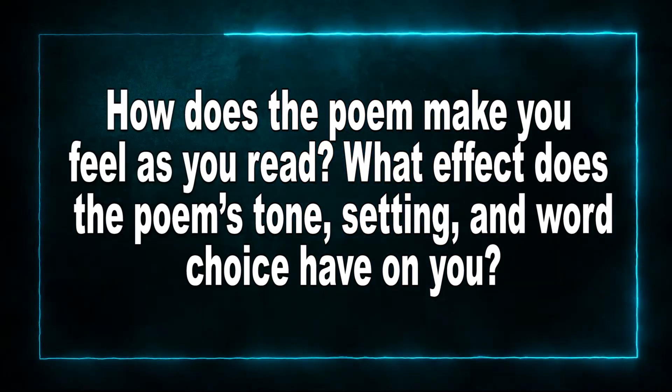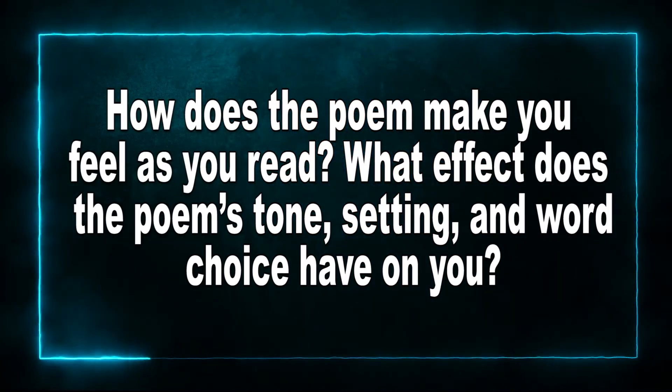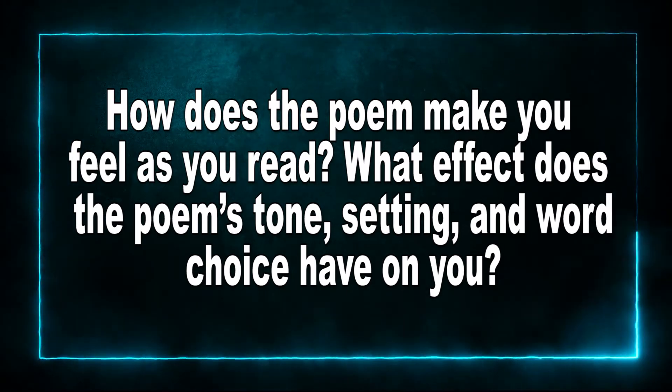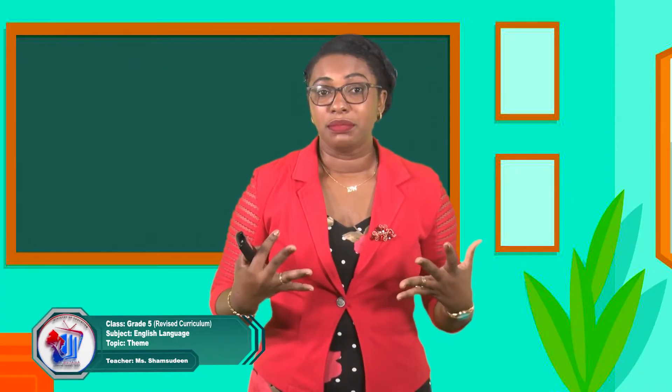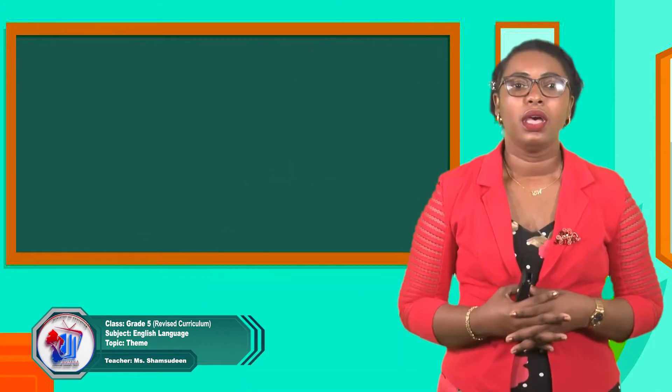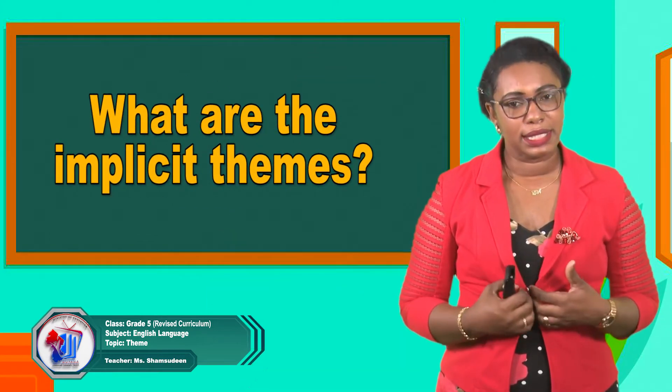Third, what is the poem's overall mood? How does the poem make you feel as you read? What effect does the tone, setting, and word choice have on you — does it make you feel happy, sad, or frightened? Fourth, what are the implicit themes? Now that you've considered the poem's tone and mood, what other less obvious ideas have you discovered? This is where you use other words to help you find deeper meanings.